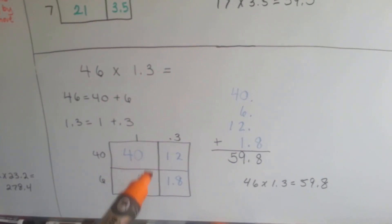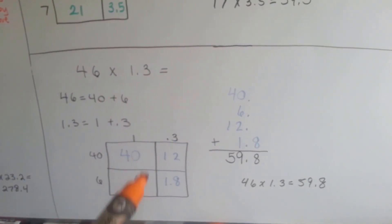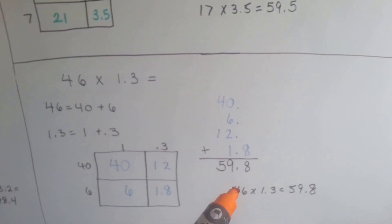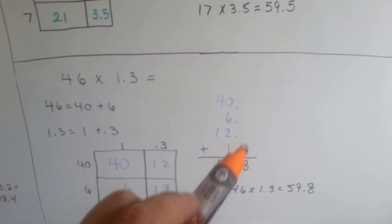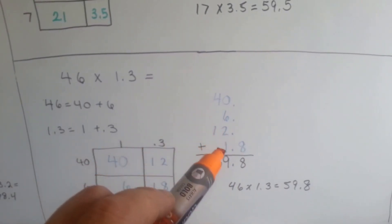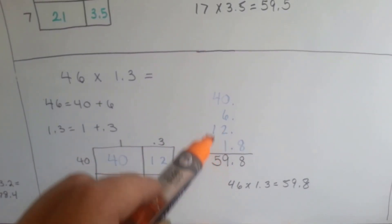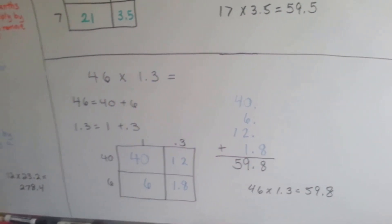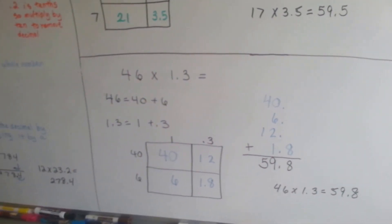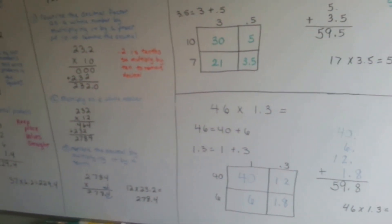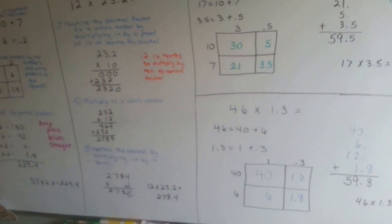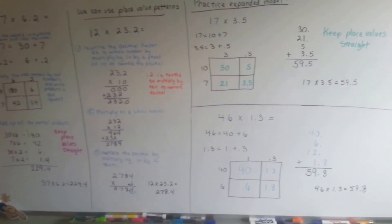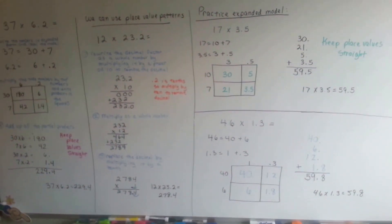We can put decimal points at the back ends of our whole numbers to keep our columns straight. We add them all up and we get 8. And 6 and 2 and 1 is 9, and 4 and 1 is 5. Our answer is 59 and 8 tenths. So that's how you can multiply decimals and whole numbers in expanded form to help you answer them.